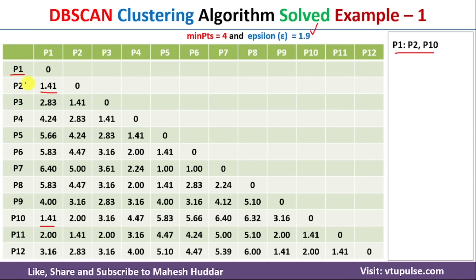Moving to P2, we check horizontally first then vertically for distances less than 1.9. Horizontally, 1.41 is less than 1.9, meaning P1 is nearest to P2. P2 to P2 is 0. Checking vertically, we find 1.41 again for P3 and another 1.41 for P11, both less than 1.9. Therefore, for P2, the nearest data points are P1, P3, and P11.